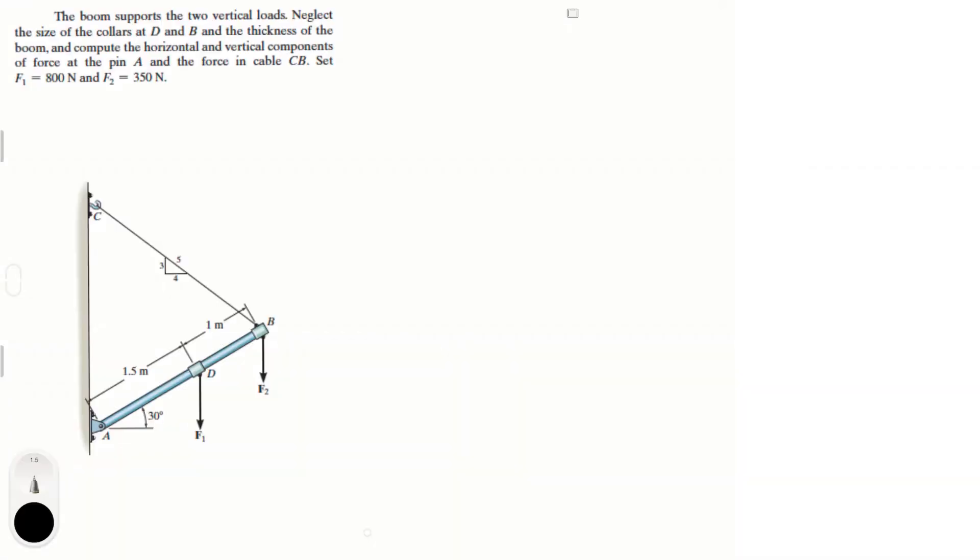Alright guys, let's do this problem that says the boom supports the two vertical loads. Neglect the size of the collars D and B and the thickness of the boom. Compute the horizontal and vertical components of force at pin A and the force in the cable. Set f1 equals 800 newtons and f2 is equal to 350 newtons.